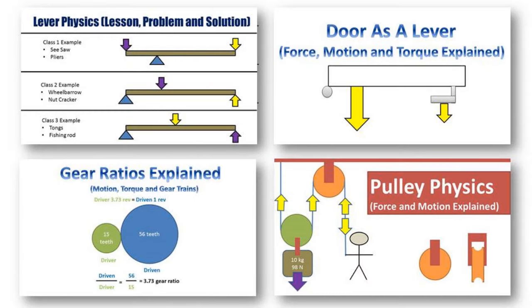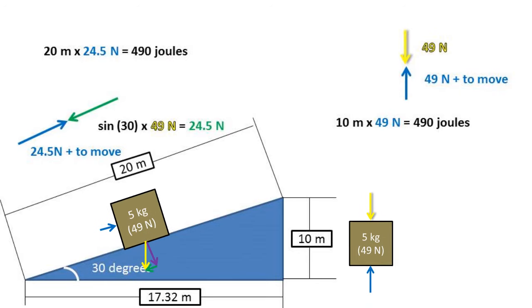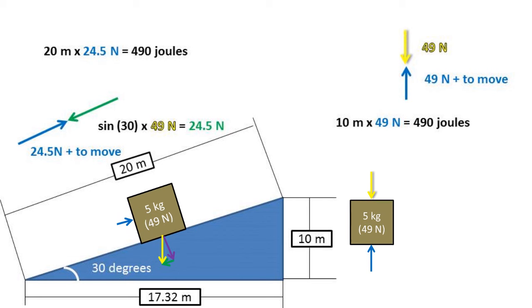As stated in previous videos, what happens when you reduce the amount of force needed to move an object? That's right, the displacement increases. In this example, lifting the box straight up, we only have to move the box 10 meters.